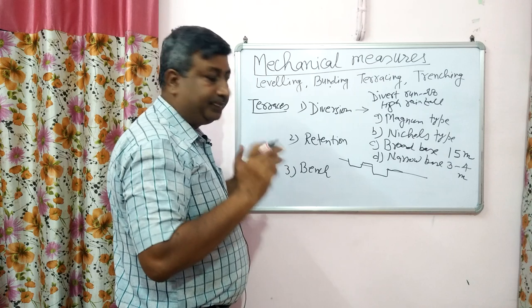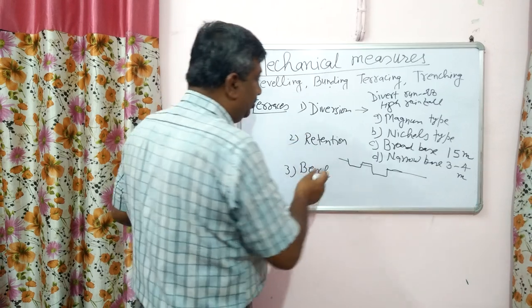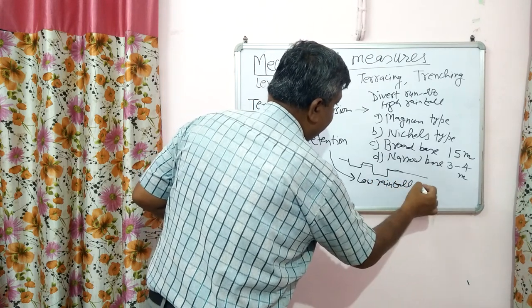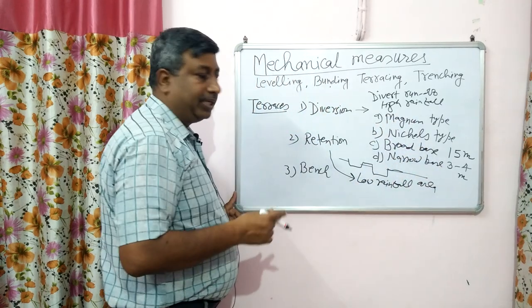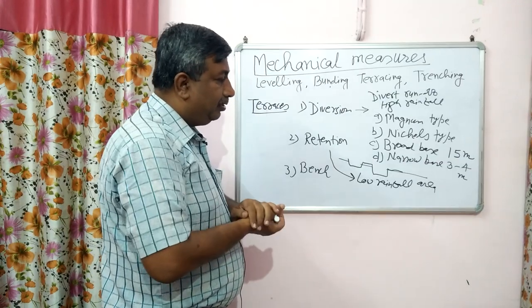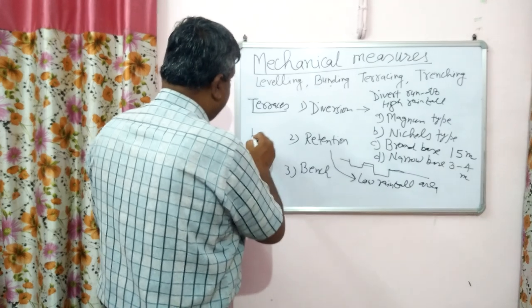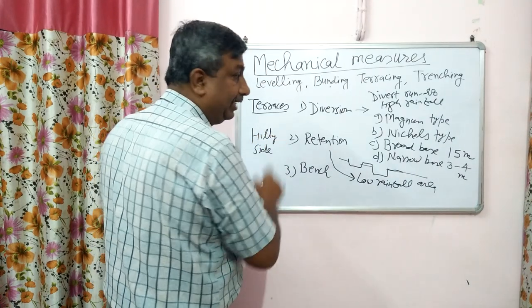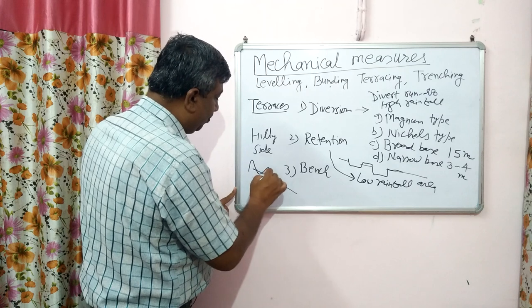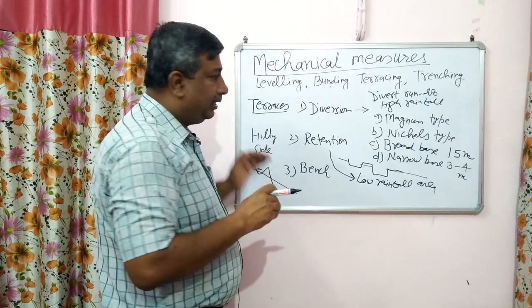The second type is retention terrace. In retention terrace, moisture and rainfall are retained — meaning runoff is retained on the surface. This is adopted in low rainfall areas. These terraces are made in hilly areas so that water is conserved on the hillside. In examination: in low rainfall areas, retention terraces are used. Retention means to conserve, and these are particularly adopted in hilly areas.